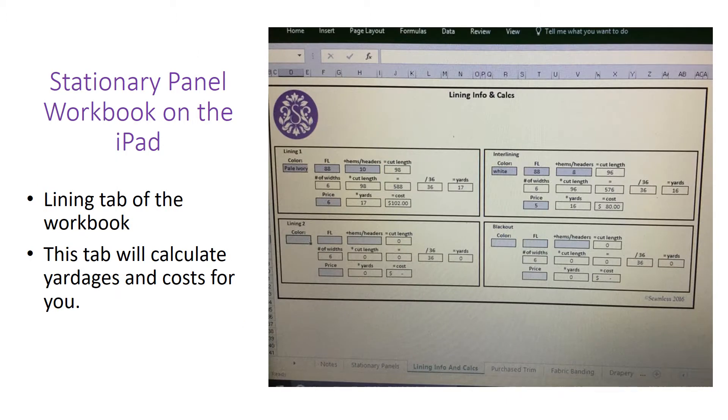The next page that you come to in the workbook is lining information and calculations. It has already carried over your number of widths from the front page and the finished length you need to put in and also the hems and headers and what price you charge. If you only had lining and inner lining on these panels, you do not need to fill out lining two or blackout.